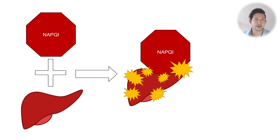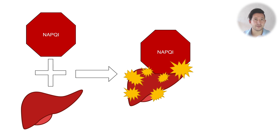Once glutathione stores fall to around 30 percent, we think that NAPQI probably bonds to the hepatocytes themselves and starts to cause cellular damage. That is the mechanism by which paracetamol overdose can cause liver failure.